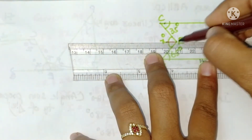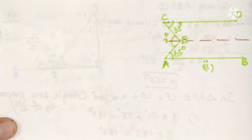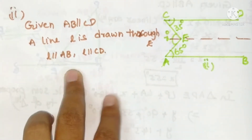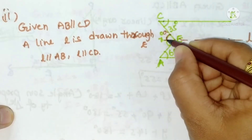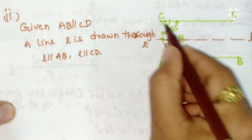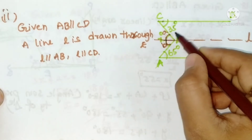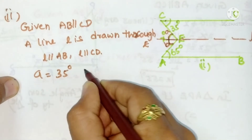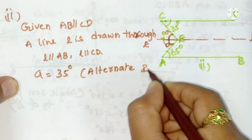Draw a parallel line L through E, parallel to both AB and CD. A line L is drawn through E: L parallel to AB and L parallel to CD. Let this angle be a and this one b. Now L and CD are parallel, and CE acts as a transversal. a and 35 degrees are alternate interior angles, so a equals 35 degrees. The reason is alternate interior angles.